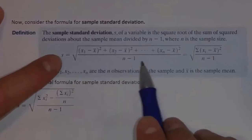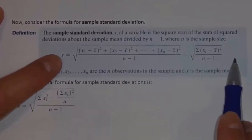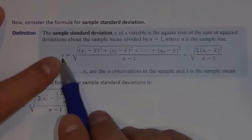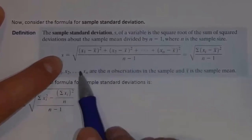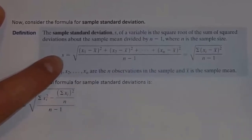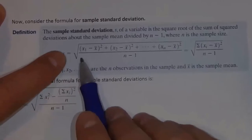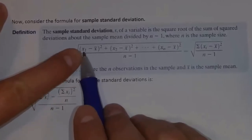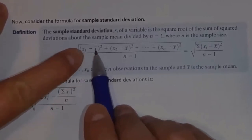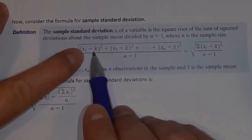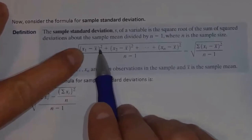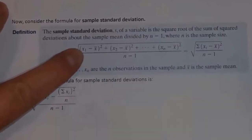If you take a look at our formula, we calculate S by using a square root — that's to get us back to normal units. We're going to take each data value minus the mean. Now that mean in this case is a sample mean, so it's an X-bar instead of a mu. And we square that. So here we took each data value minus the mean, squared it, and added that up.